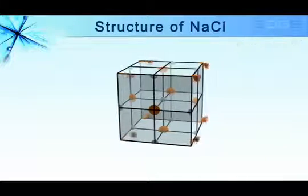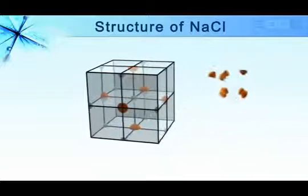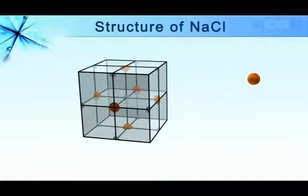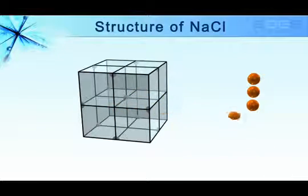Total number of Cl ions per unit cell is 1/8th of 8 Cl ions at the corner of the cube and half of 6 Cl ions at the face centers of the cube. So total number of Cl ions per unit cell is 4.